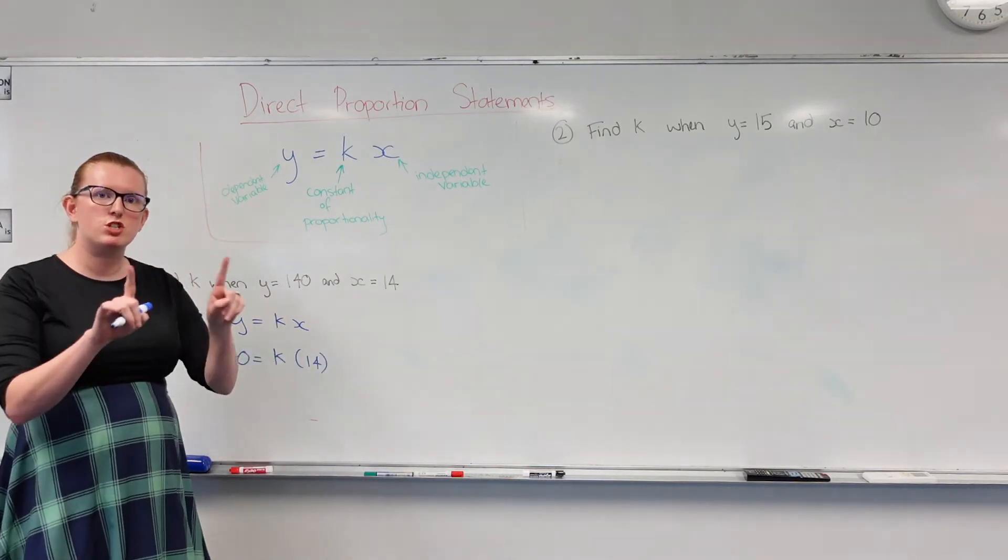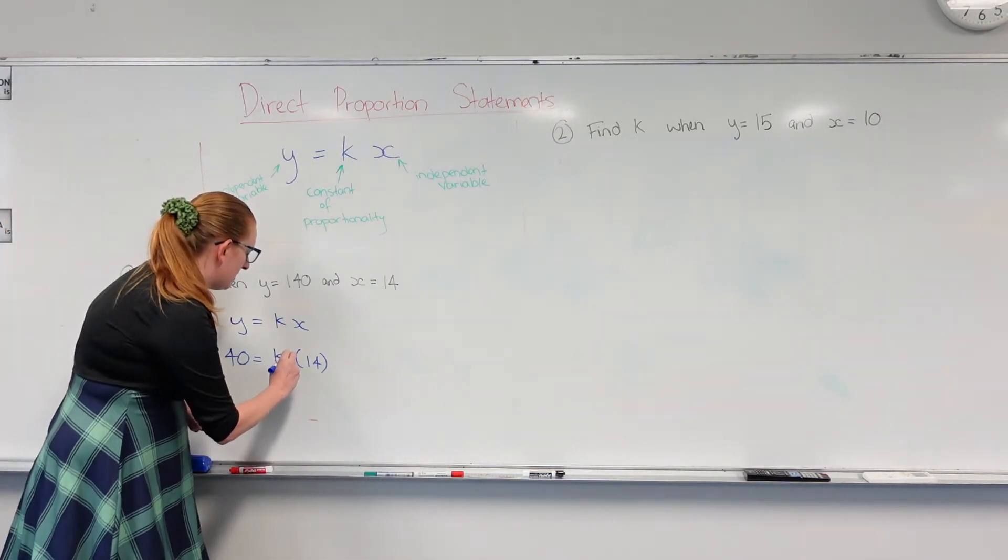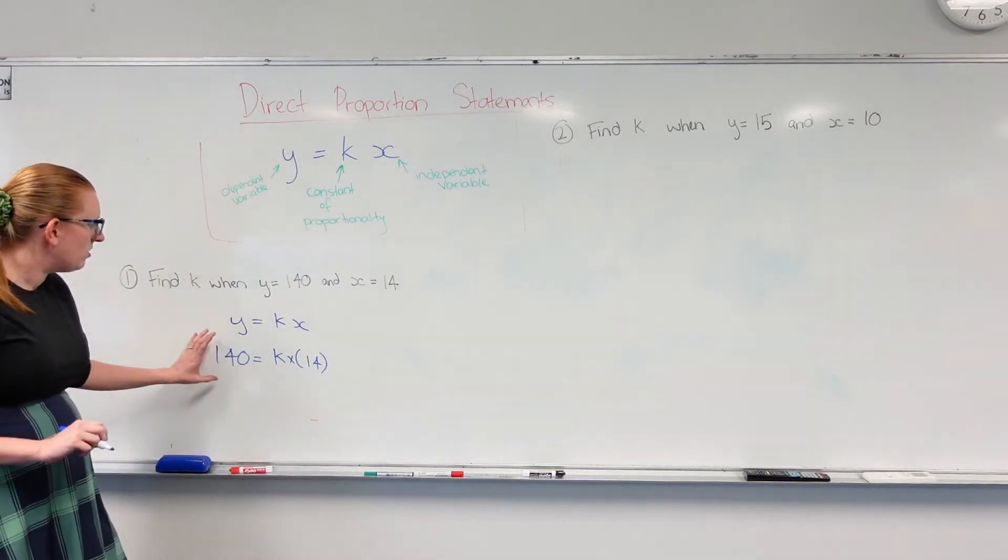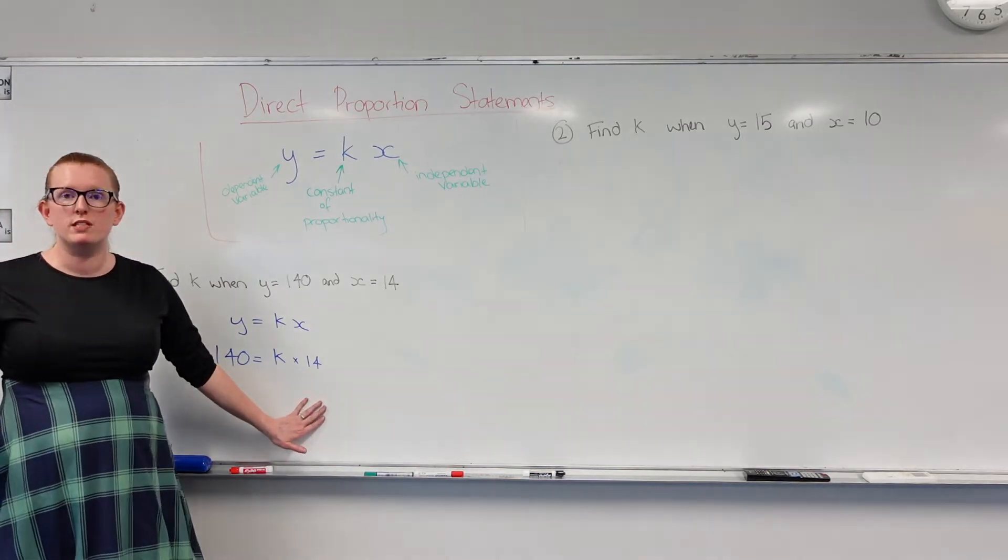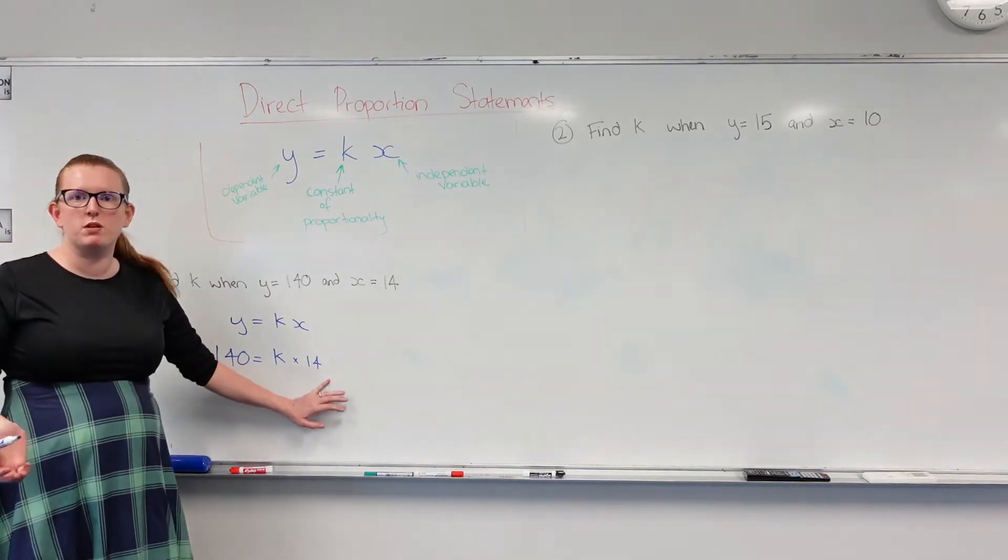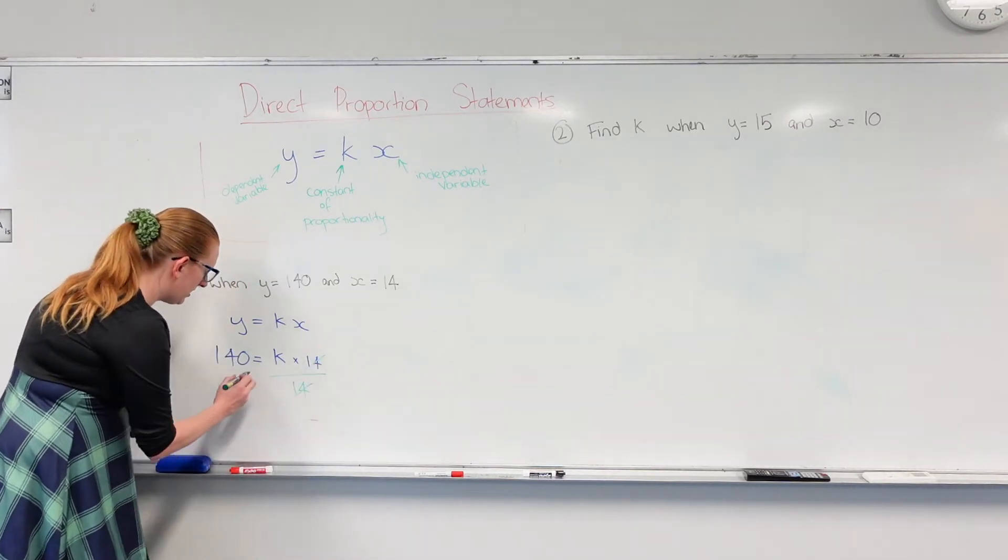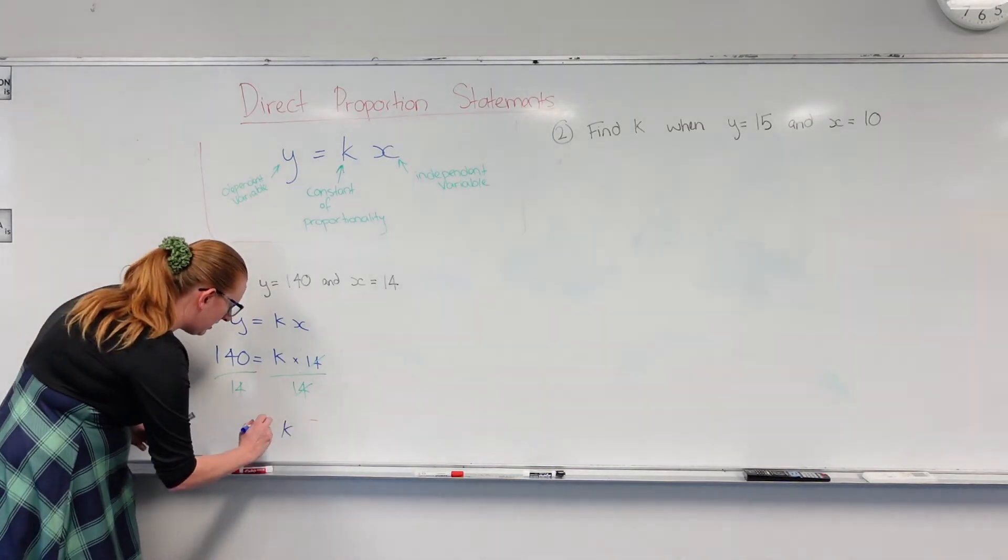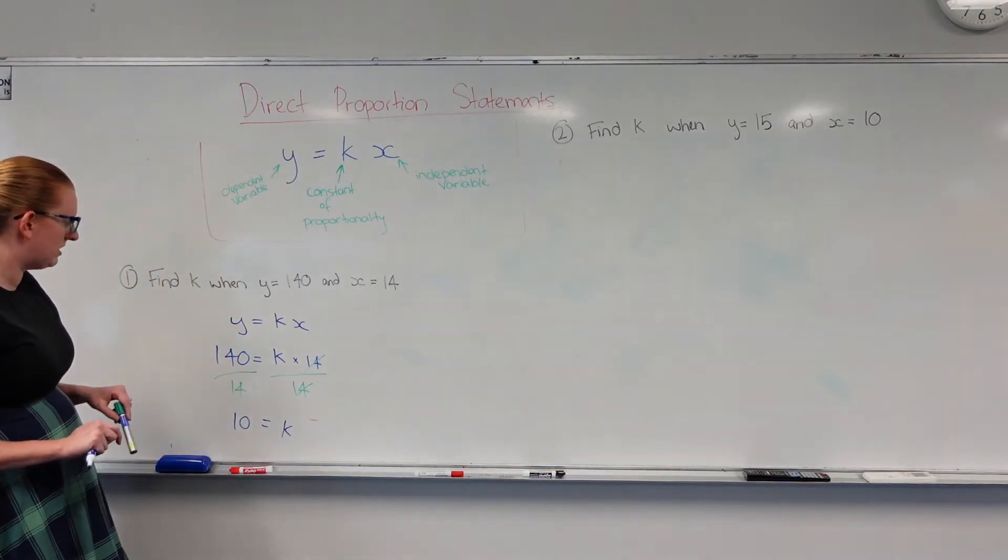Now anytime you have two letters shoved up against each other, you know they're going to be multiplied together. So this is a little invisible multiplication sign in here. So how do I move this 14 over to the other side? Because at the end of the day, I'm trying to find out what k is equal to. What is the opposite of multiplying by 14? I'm going to divide by 14. That cancels them out, and I divide the other side by 14, and I get k is equal to 10 because 14 goes into 140 ten times.